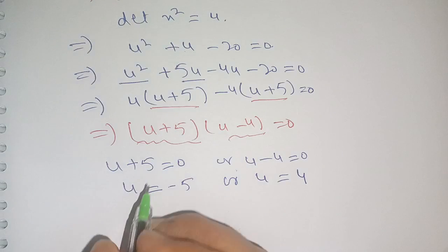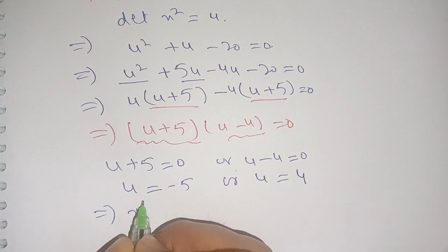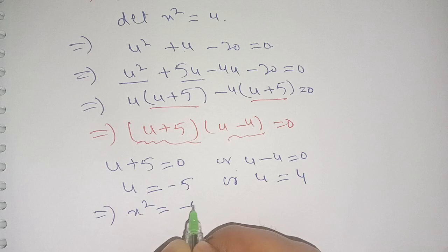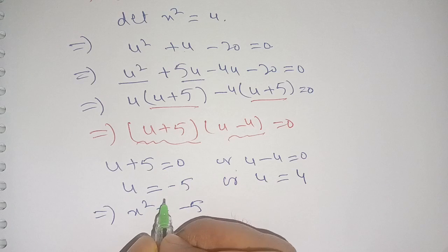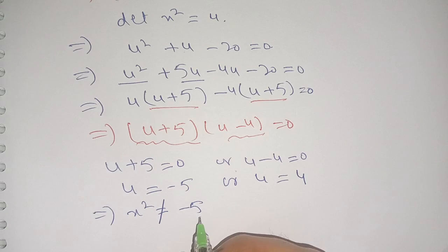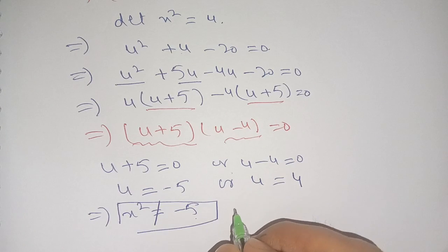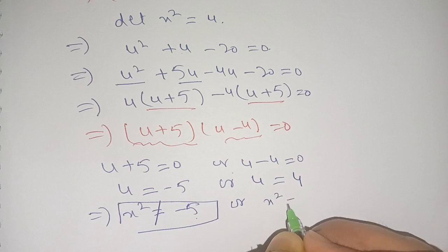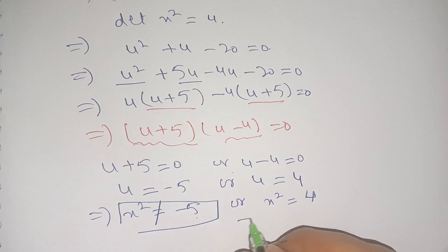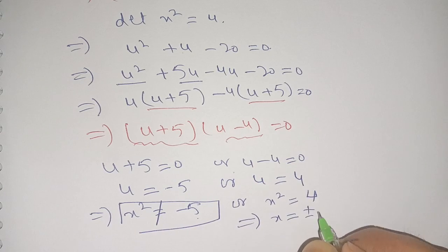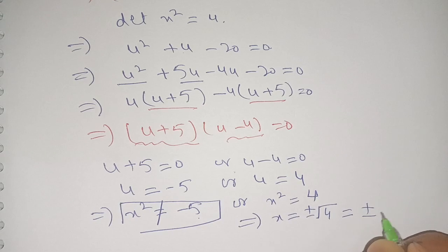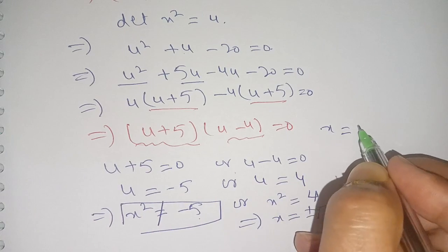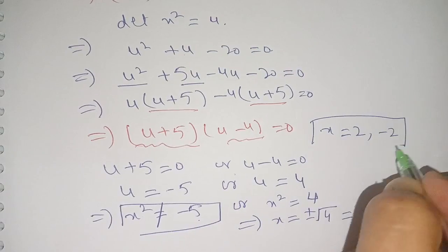Since u = x², we substitute back. x² = -5 is rejected (no real solution). From x² = 4 we get x = ±√4 = ±2. Thus the values of x are +2 and -2.